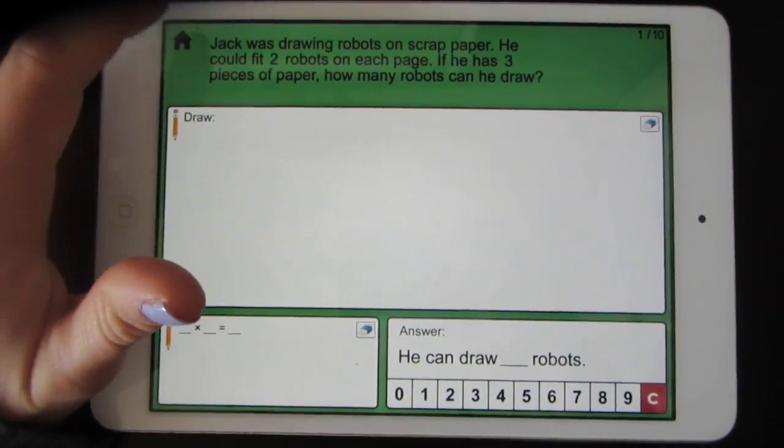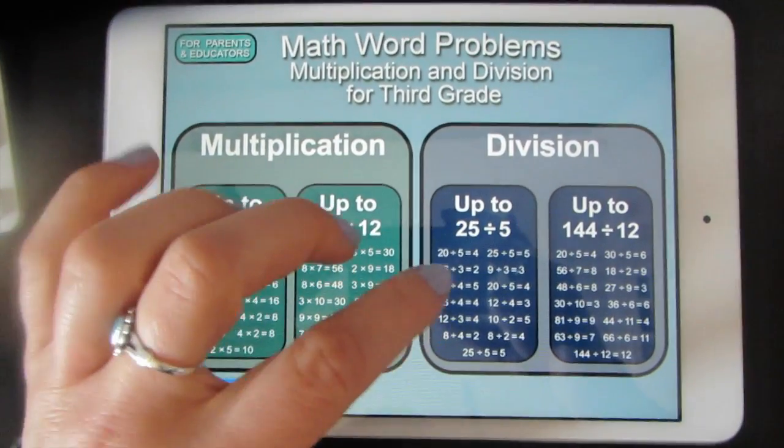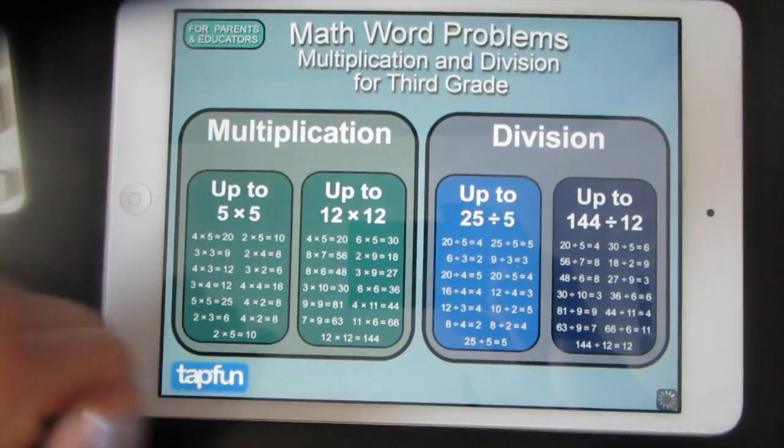To try a division problem, tap the home screen. And then try division up to 25 divided by 5.